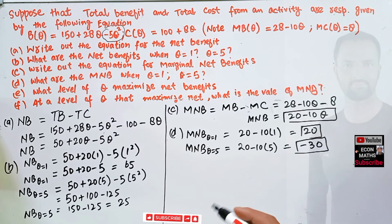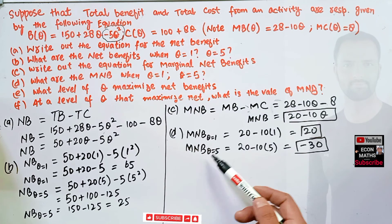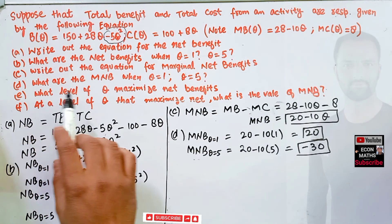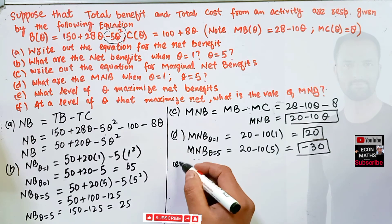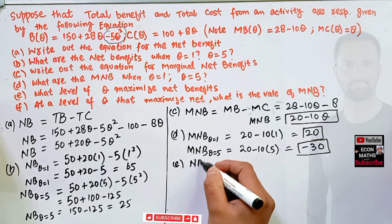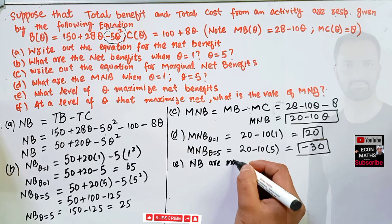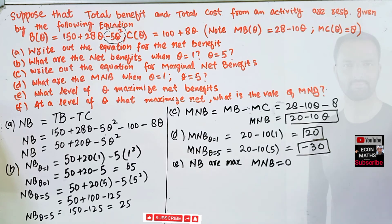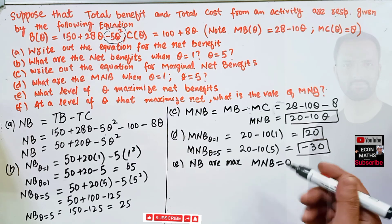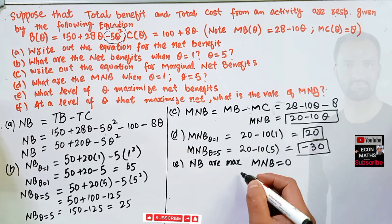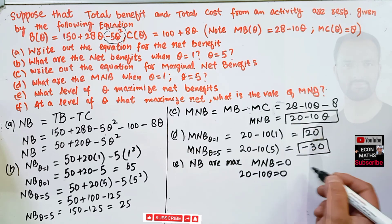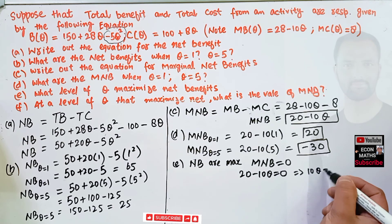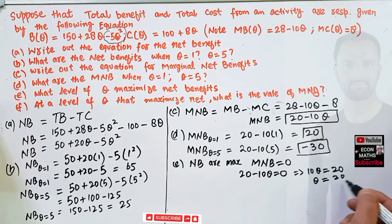Part E asks for the level of Q that maximizes net benefit. Net benefits are maximized when marginal net benefit equals 0 — the same logic as total revenues being maximized when marginal revenue is 0. Setting our marginal net benefit function to zero: 20 - 10Q = 0, so 10Q = 20, which gives Q = 20/10 = 2.